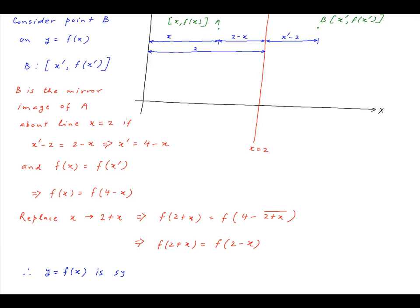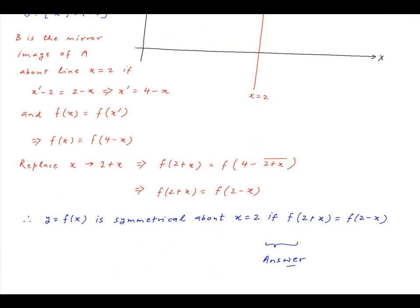Therefore y = f(x) is symmetrical about the line x = 2 if f(2 + x) = f(2 - x), and this is the required condition.